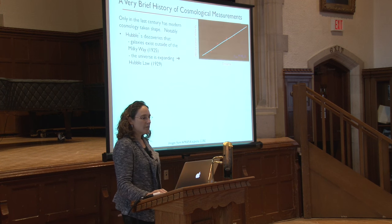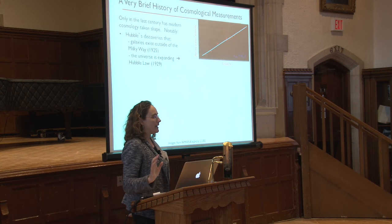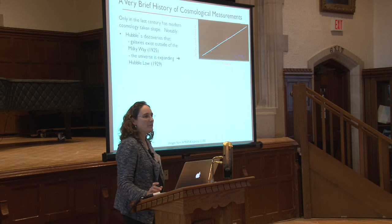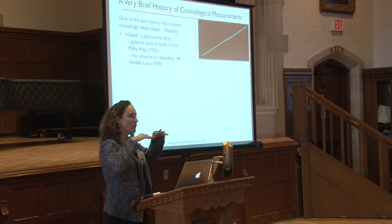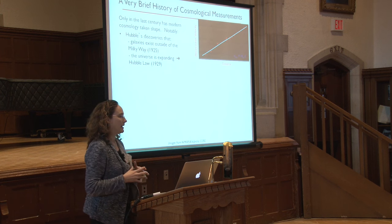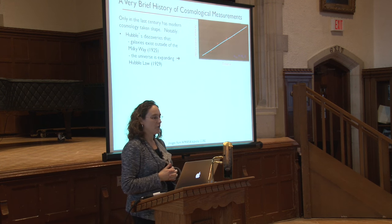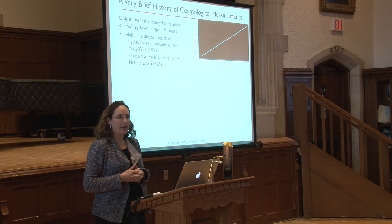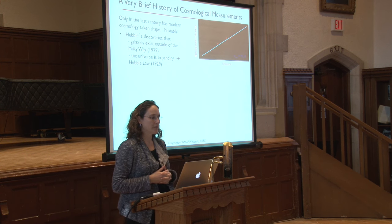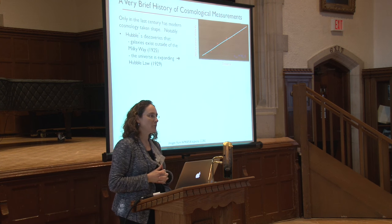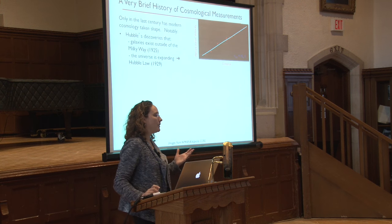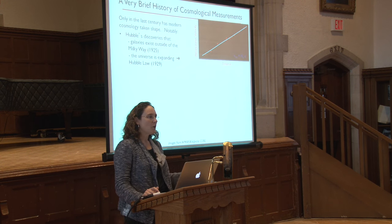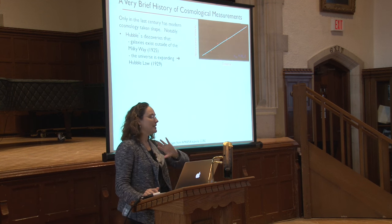Since then, structure has been forming in the form of filamentary structures, clusters, and voids, to the modern universe today, which is about 13.7 billion years old. Let me do a lightning quick review of the kinds of cosmological measurements we've been doing to get to this overall framework. There has been enormous progress over the last half century to century, and it's really only in this time that the picture of modern cosmology has taken shape.